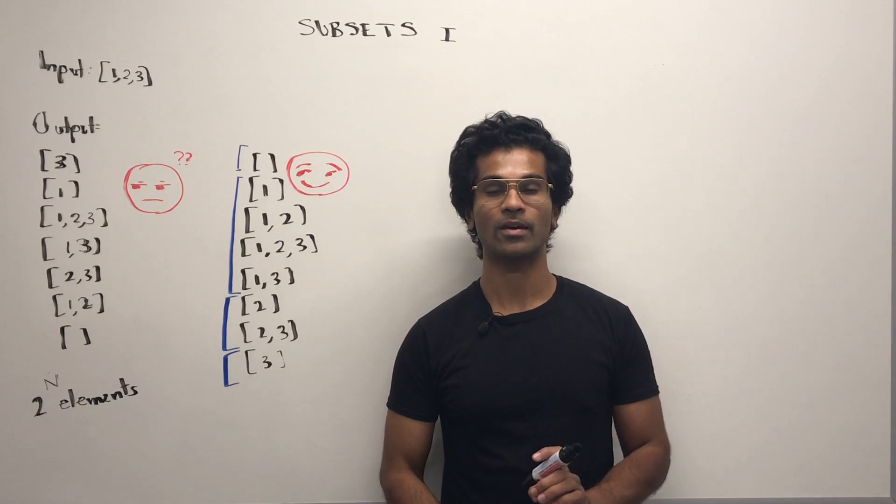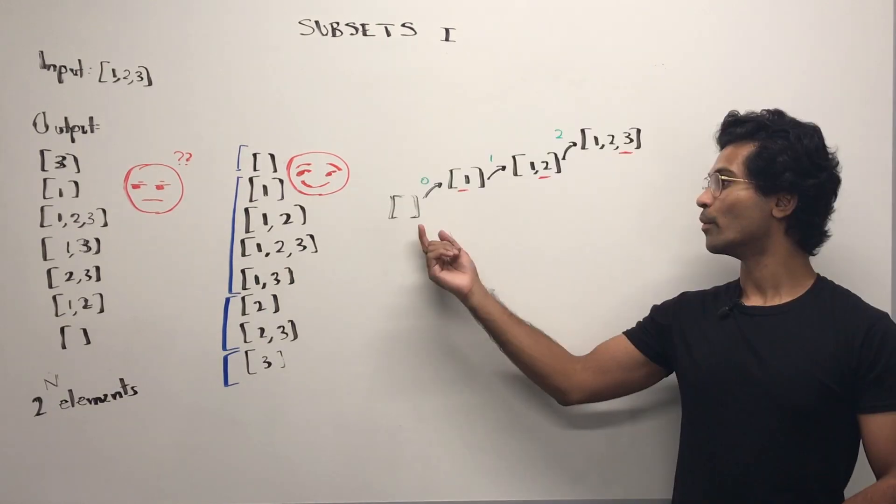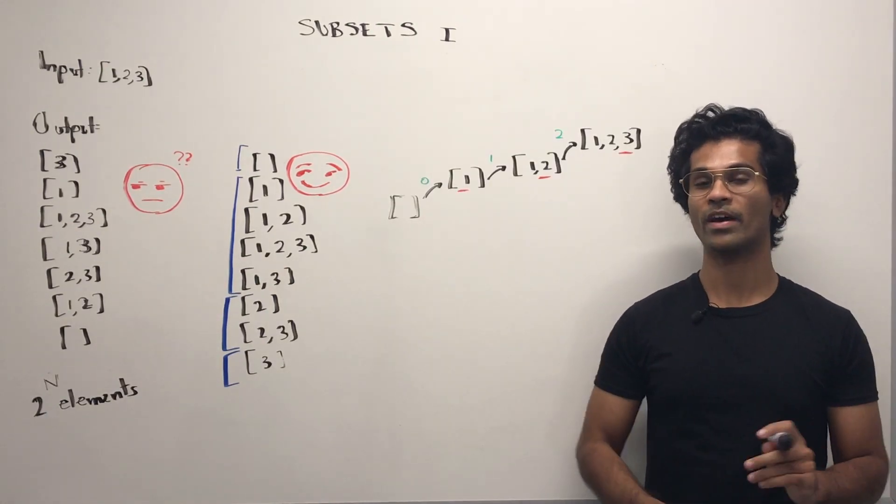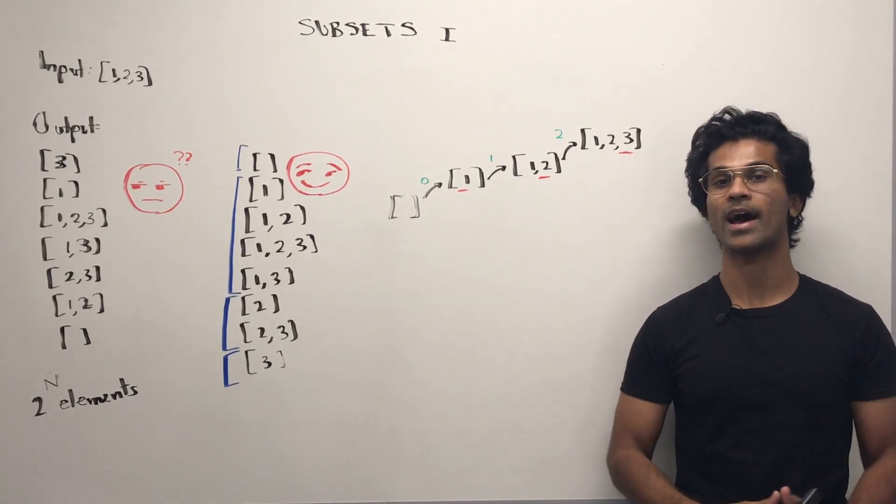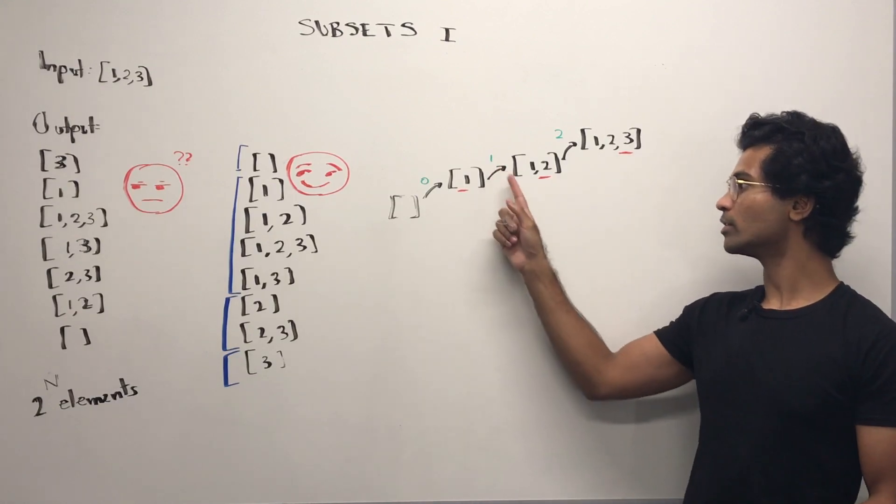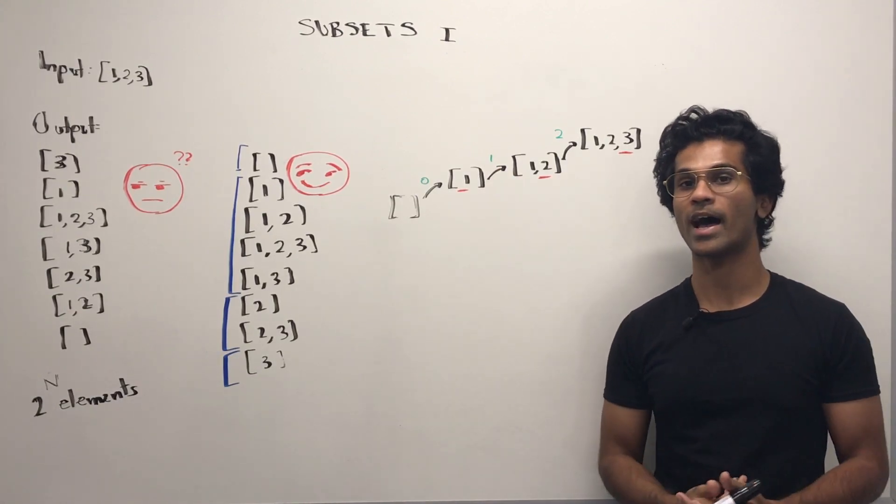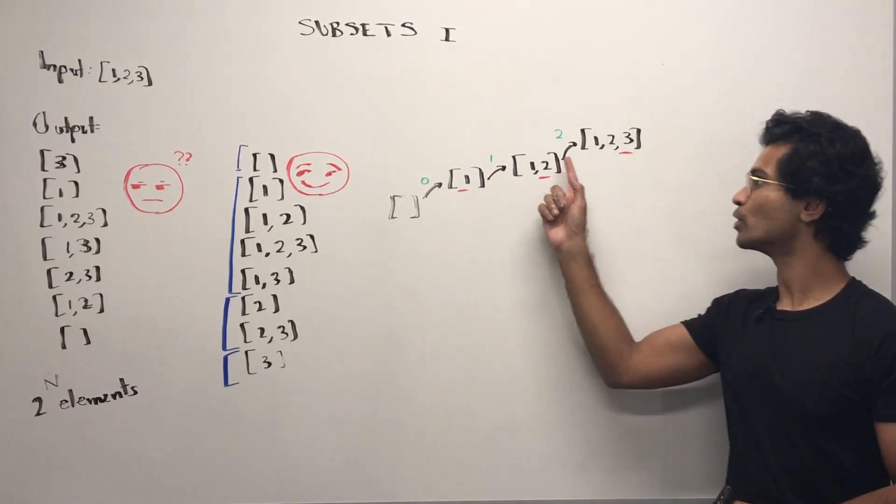Let's write that down in our recursive stack. We have our empty set and then we are going to add the number at index zero, so one, and then we're going to add the number at index one, so two, and then we're going to add the number at index two, which is three.